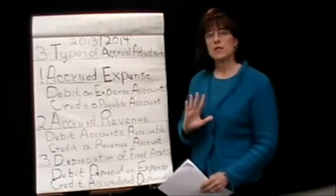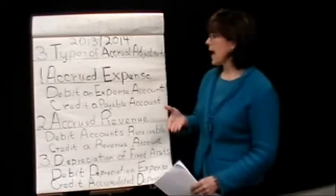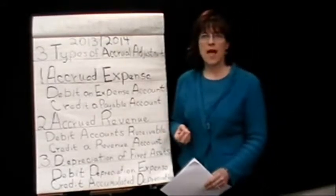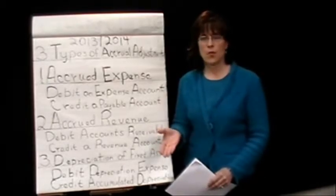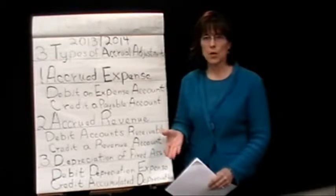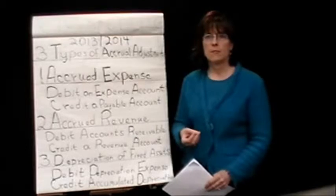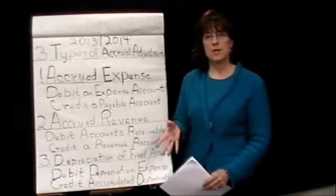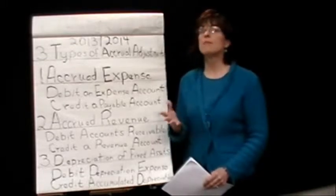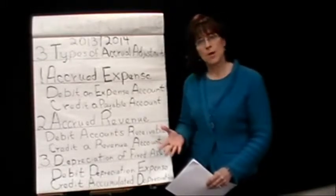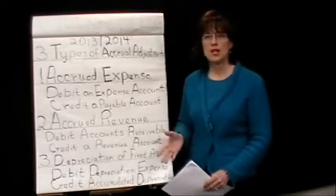There are three specific types of accrual adjustments. First, there are accrued expenses — those are expenses where we've already consumed the product or service but haven't paid for it yet. We may even have the invoice but haven't paid for it. Second, there's accrued revenue, where we may have delivered the product or provided the service for our customer but haven't billed them yet, so it hasn't shown up on our books.